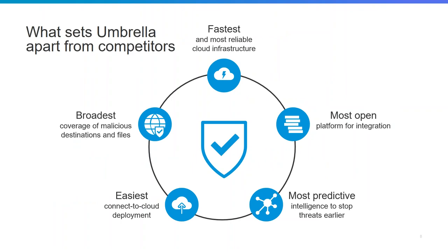What sets Umbrella apart from the competitors? It's the fastest, most reliable cloud infrastructure. In terms of deployment, it's definitely the easiest to configure — simple DNS redirection. The most open platform for integration, with third-party integrations and custom APIs. The most predictive intelligence to stop threats earlier, with integration with Talos, and visibility of over 80 billion DNS requests daily — actually higher than 80 billion now — to determine and have that predictability, plus automation, analytics, and threat intelligence to detect zero-day threats.